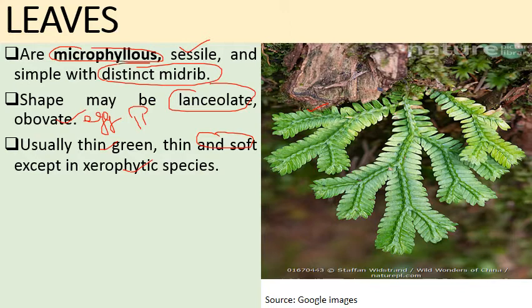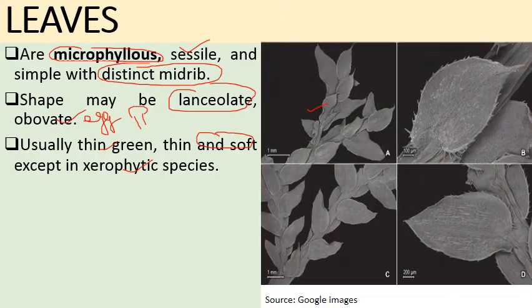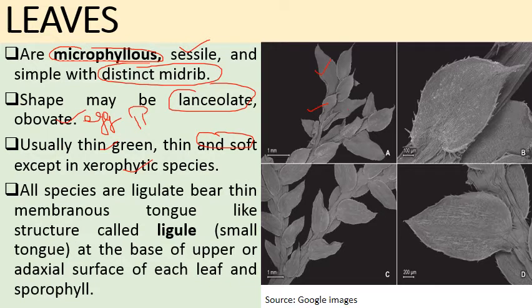In Homeophyllum, leaf arrangement is spiral and leaves are almost similar in shape and size. In the Heterophyllous subgenus, leaves are arranged in four vertical rows — two dorsal rows with smaller leaves and two ventral rows with larger leaves — so the leaves are anisophyllous. This photograph shows Selaginella leaves under electron microscopy, clearly showing the size difference.